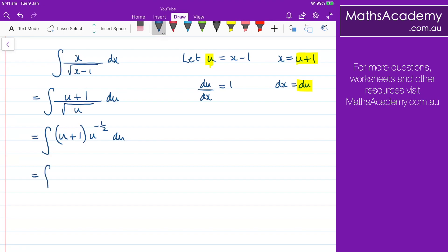I can now expand this bracket. So I've got u to the power of 1 multiplied by u to the power of negative 1 half. So I have u to the power of 1 half plus u to the negative 1 half, with respect to u.